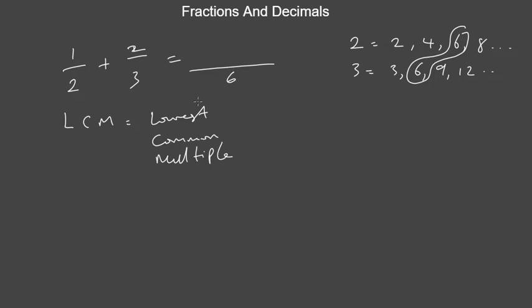So if you add 3 and 4, you get 7 over 6. If you convert that to a mixed fraction, 6 goes into 7 once with remainder 1, giving you 1 and 1 over 6. For subtraction you follow the same process — find the lowest common multiple and then subtract. This is how you add and subtract fractions.